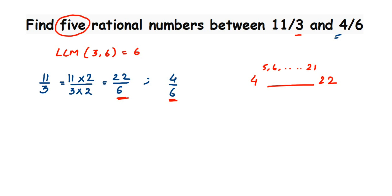We will conclude the answer. Therefore, 5 rational numbers between 11 by 3 and 4 by 6. Remember, 11 by 3 equivalent is 22 by 6. They both are equal but instead of taking 11 by 3, we are taking 22 by 6. If you cancel 22 and 6, you want to get back again 11 by 3.